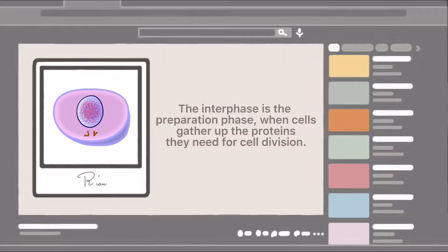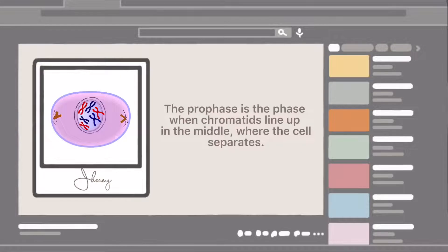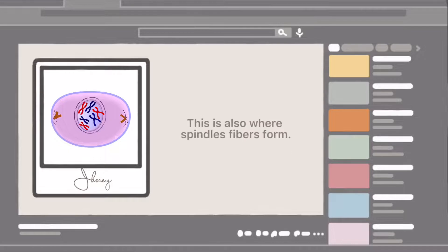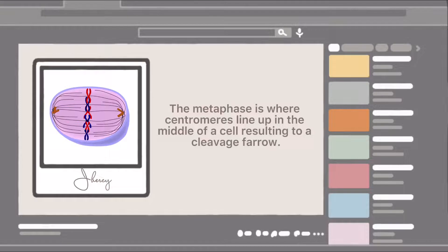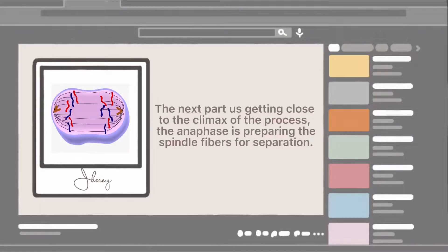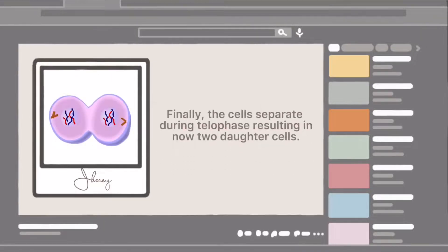The prophase is the phase when chromatids line up in the middle where the cells separate. This is also where spindle fibers form. The metaphase is where centromeres line up in the middle of the cell resulting in a cleavage furrow. The next part is getting close to the climax of the process. The anaphase is preparing the spindle fiber for separation.